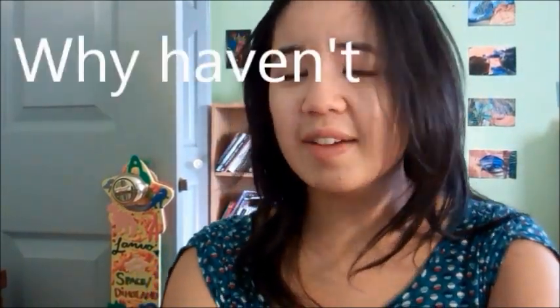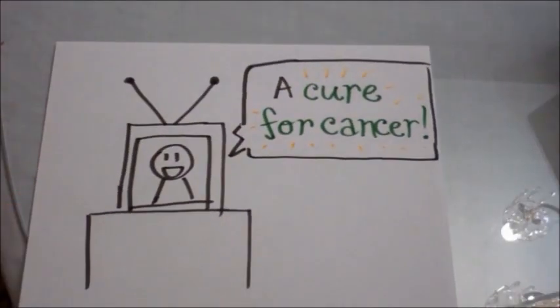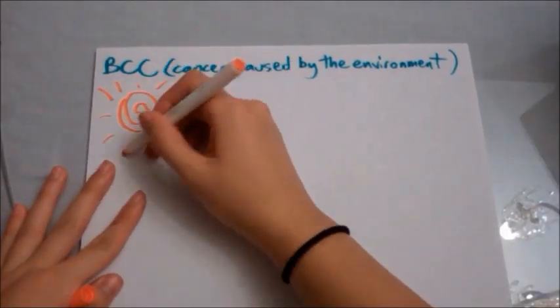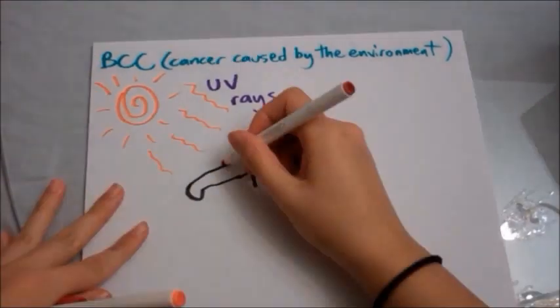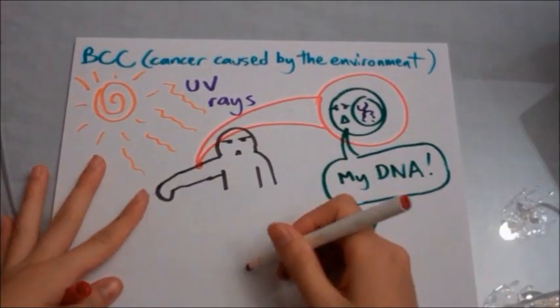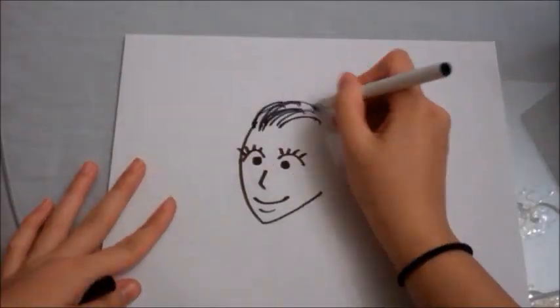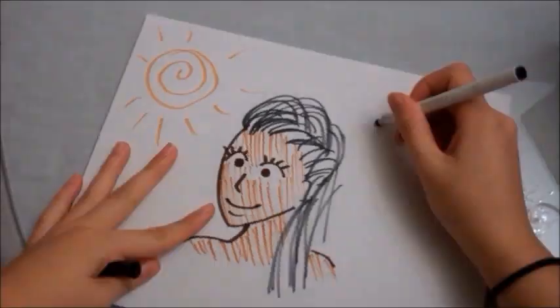So, why haven't we found a cure yet? We always hear all this talk about finding that cure for cancer. But the problem is that cancer can't be solved with a single treatment because they're all so different and work in complex ways. For example, the most common form of cancer, basal cell carcinoma, is usually caused by sunlight. Ultraviolet rays from the sun cause random genetic mutations in the cell, mutations that often lead to malignant growth. Which is why people who tan are more likely to develop skin cancer.